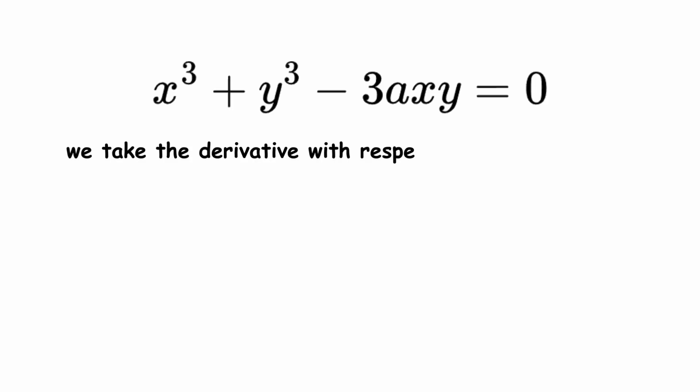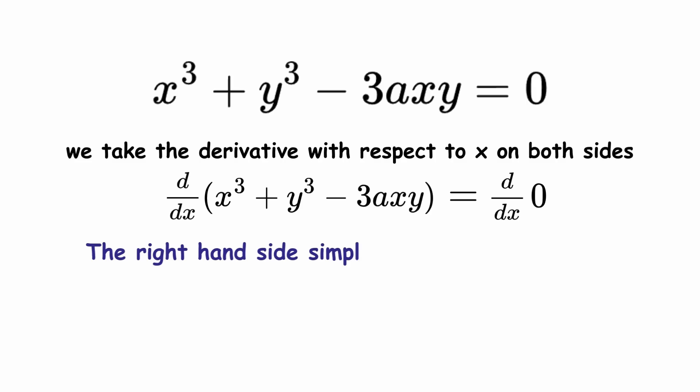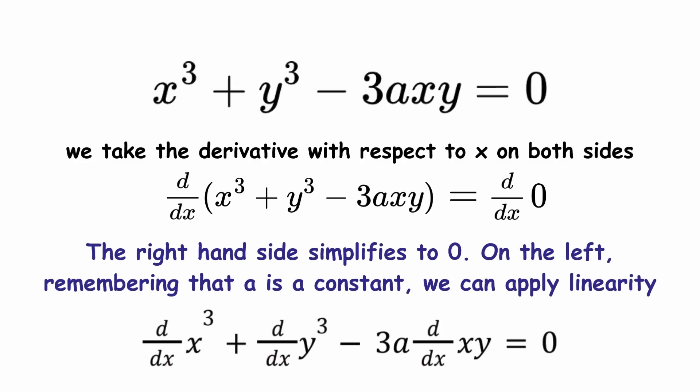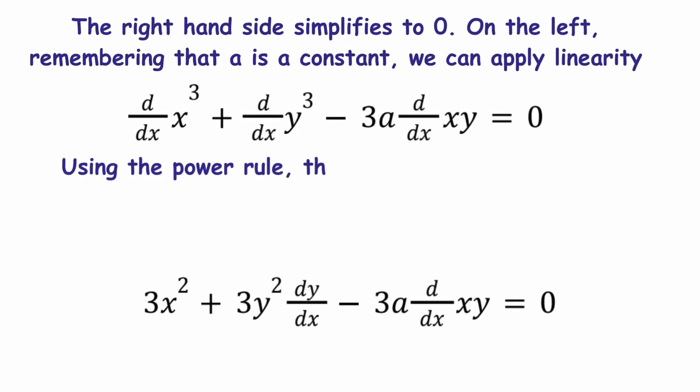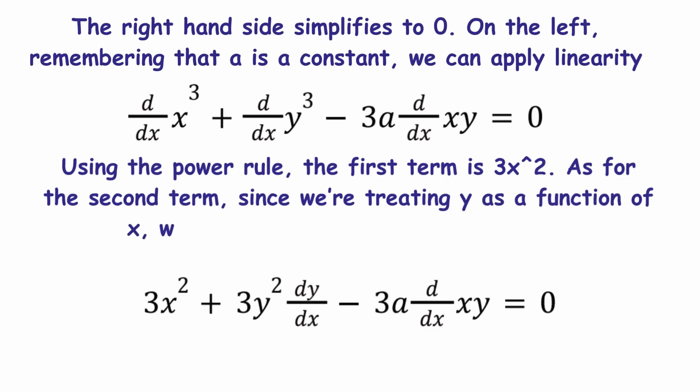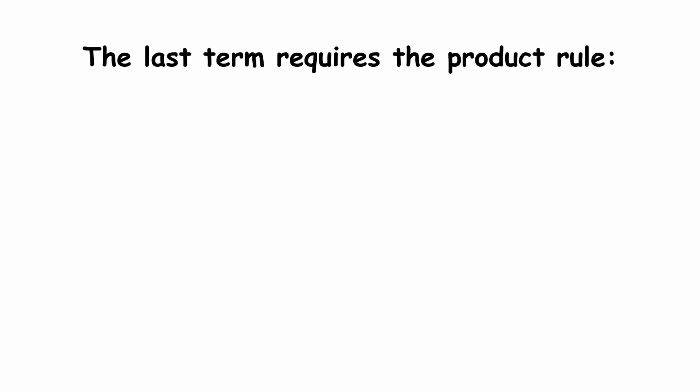Now we take the derivative with respect to x on both sides. The right-hand side simplifies to zero. On the left, remembering that A is a constant, we can apply linearity. Using the power rule, the first term is 3x squared. As for the second term, since we are treating y as a function of x, we will use the power and chain rules. The last term requires the product rule.